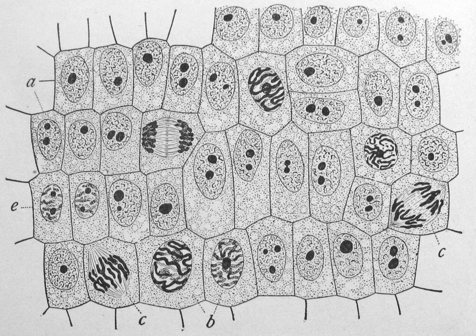All cells, whether prokaryotic or eukaryotic, have a membrane that envelops the cell, regulates what moves in and out, and maintains the electric potential of the cell. Inside the membrane, the cytoplasm takes up most of the cell's volume. All cells except red blood cells, which lack a cell nucleus and most organelles to accommodate maximum space for hemoglobin, possess DNA, the hereditary material of genes, and RNA, containing the information necessary to build various proteins such as enzymes, the cell's primary machinery.